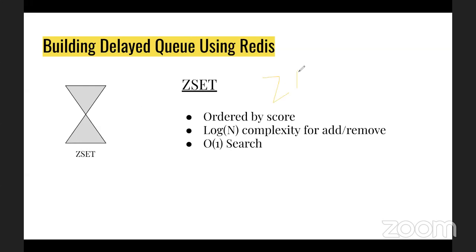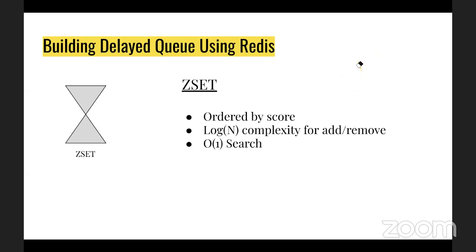Using ZADD and ZREM, you can also use ZGET to check if an element with a given key-value pair exists in the ZSet. You can retrieve elements using ZRANGEBYSCORE to get elements at the top by score. This way you can check if the scheduled time (priority) of a given task has been reached.